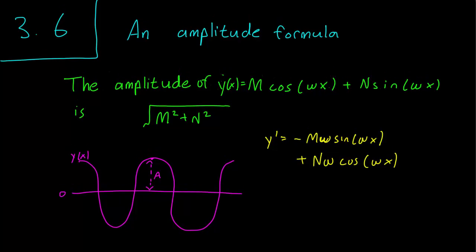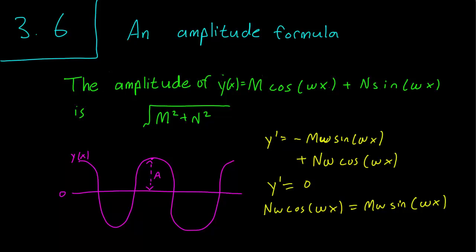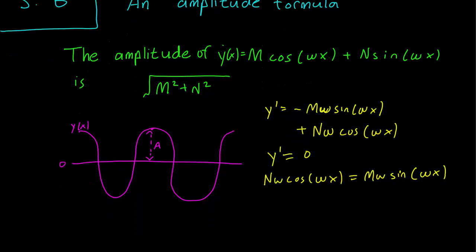We know that y reaches its maximum when the derivative is zero. So setting this equals zero is the same as saying that Nω cos(ωx) equals Mω sin(ωx). So we divide both sides by cosine to get tan(ωx) equals N over M.